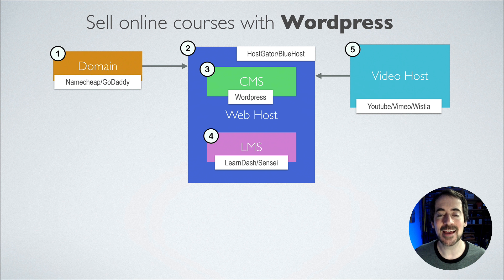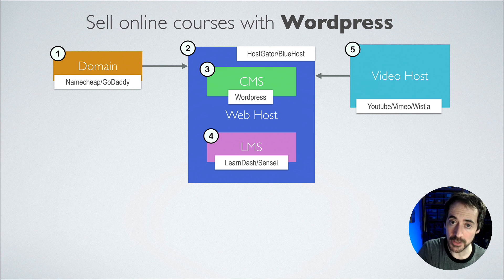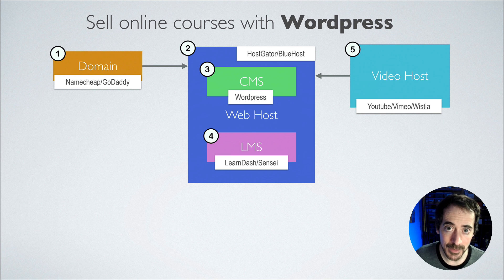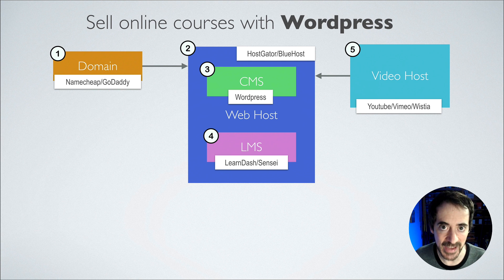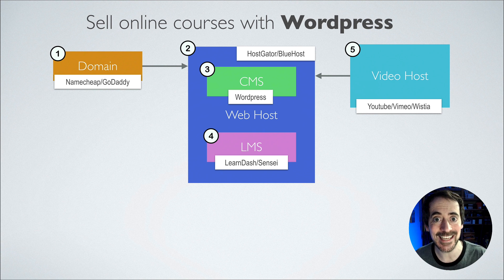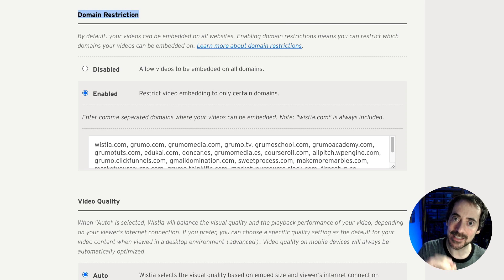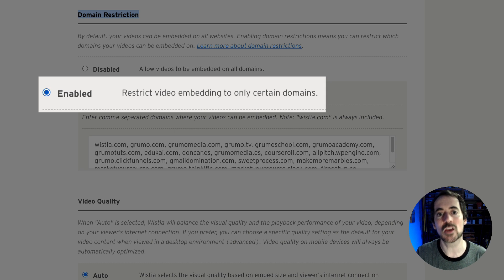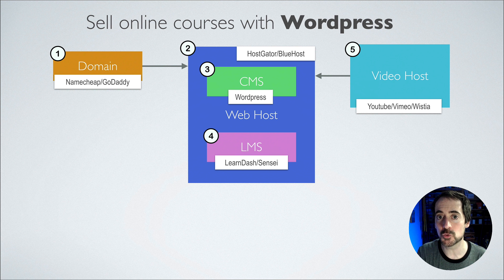The trick with YouTube is to make your video unlisted — it's not searchable, but anybody with the direct link could potentially watch your videos for free. This is unlikely to happen, and if you don't have the budget for a video hosting company, YouTube is your best bet. But if you do have some money for video hosting, it's highly recommended to choose Vimeo or Wistia, because they allow you to protect your video links so someone can't access or download the video from outside your site.